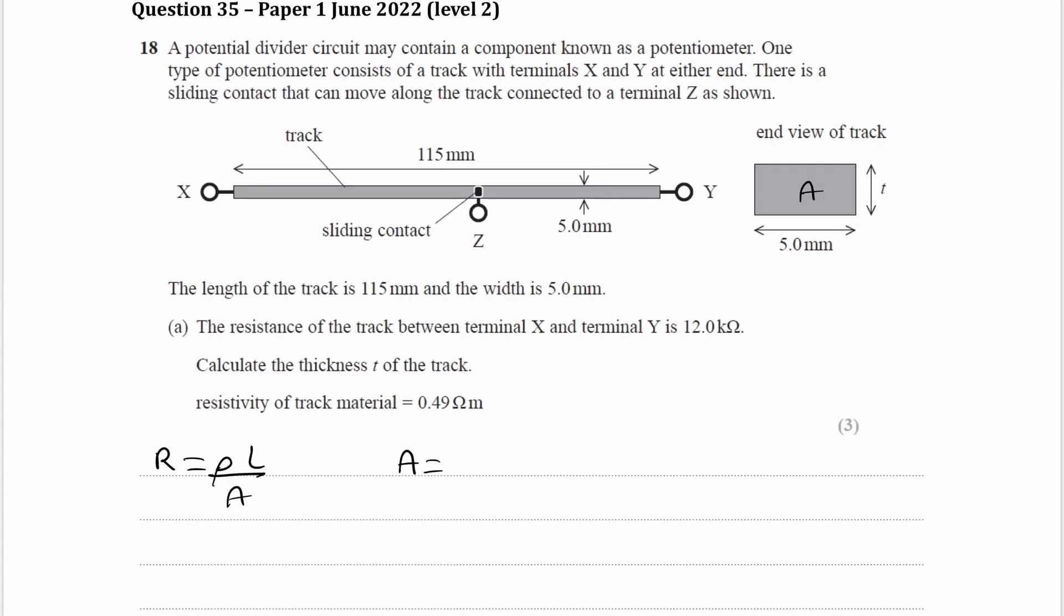The area is the width times the thickness. The width equals 0.005 meters. We're told the resistivity is 0.49. The length is the length of the entire track. In the question, the resistance of the track between X and Y is 12,000 ohms. Therefore the length would be 115 millimeters, or 0.115 meters. We're given the resistance as 12,000 ohms. So this is resistivity times length over width times thickness.